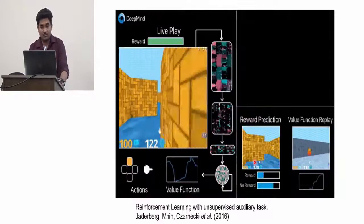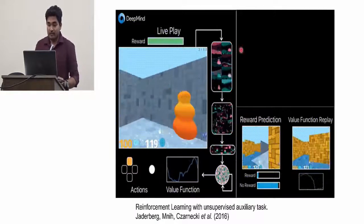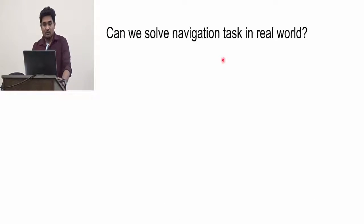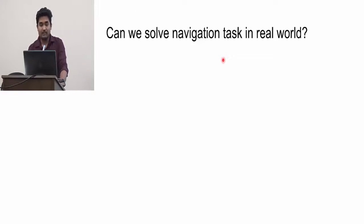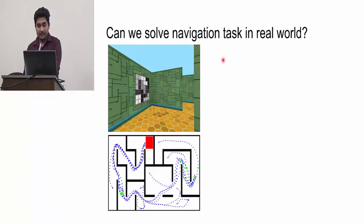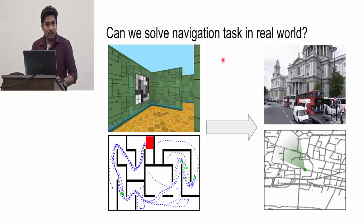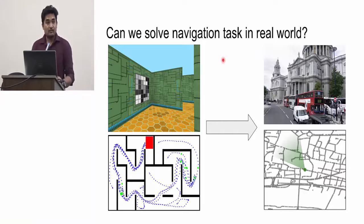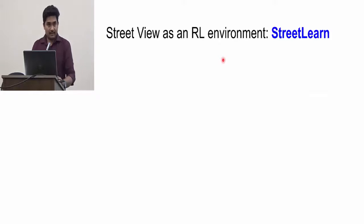You can see the output of the convolutional layers they have used. The main problem of Google's work was that it was in a simulated environment, and their target was: can we solve this navigation task in the real world? So they replaced the simulated environment with Google Street View, and instead of a maze, they created a graph using Google Maps to move into a real-world environment.